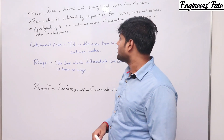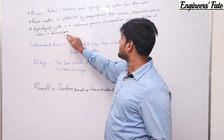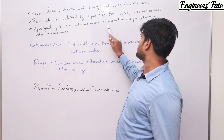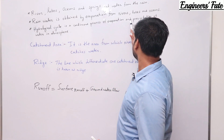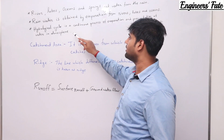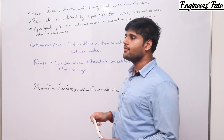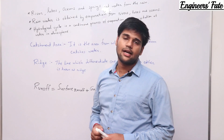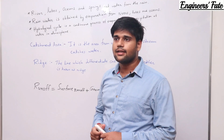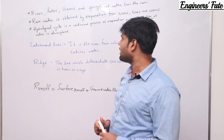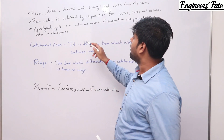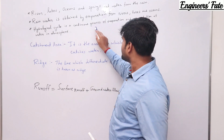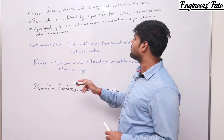The third point is that the hydrological cycle is a continuous process of evaporation and precipitation of water in the atmosphere. We have seen what the hydrological cycle is in the last class and from a clear point of view, this statement is correct.